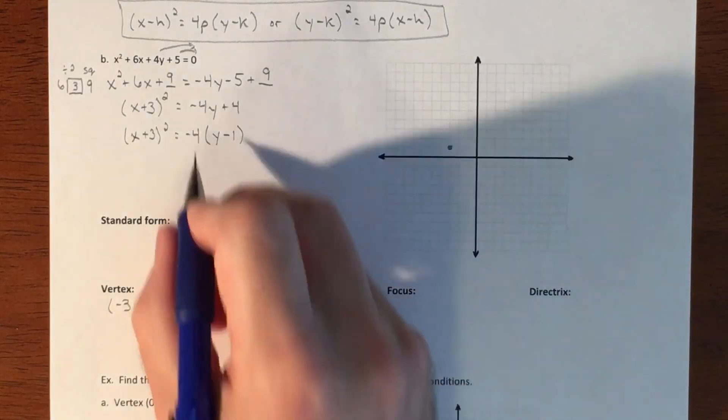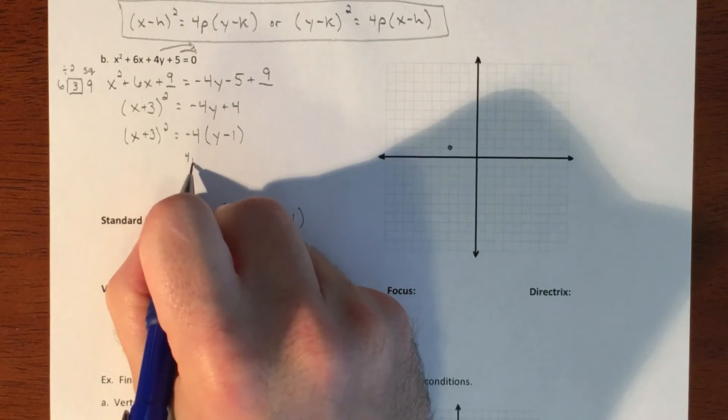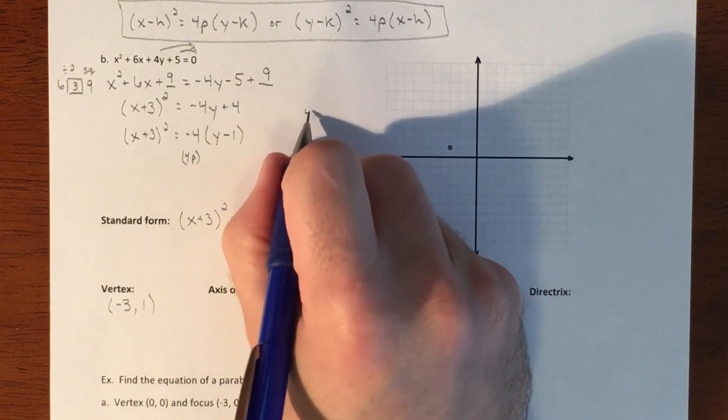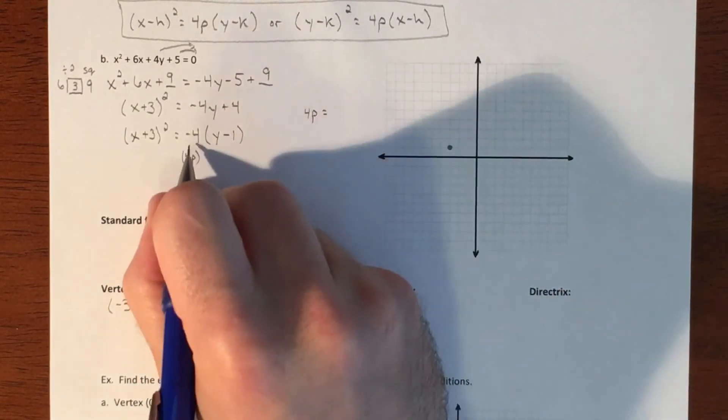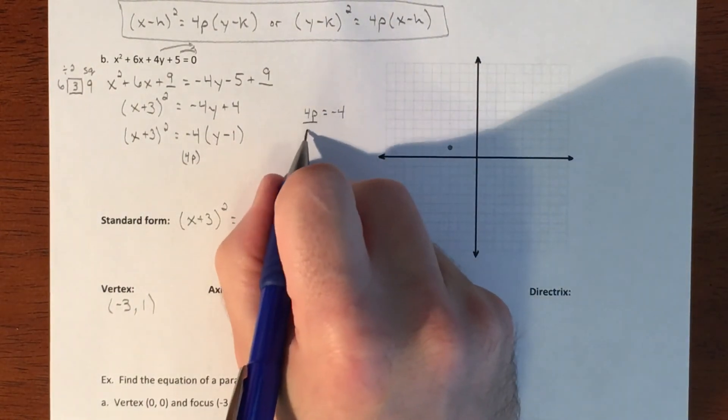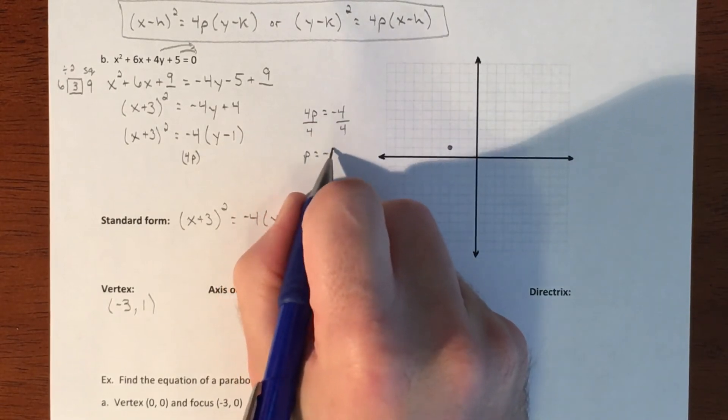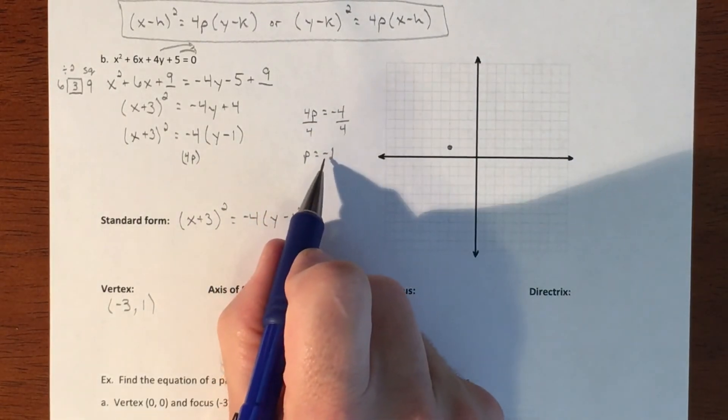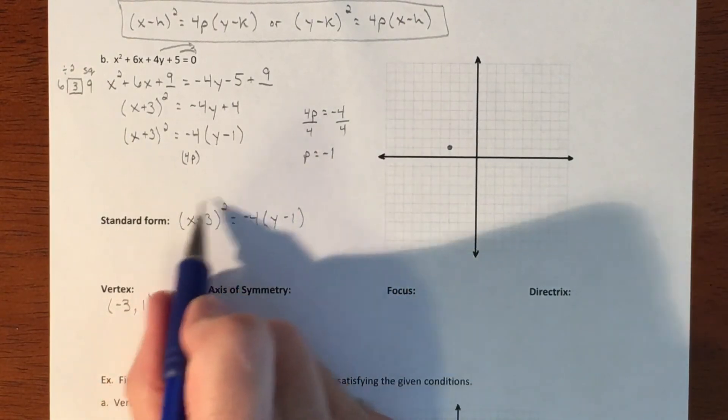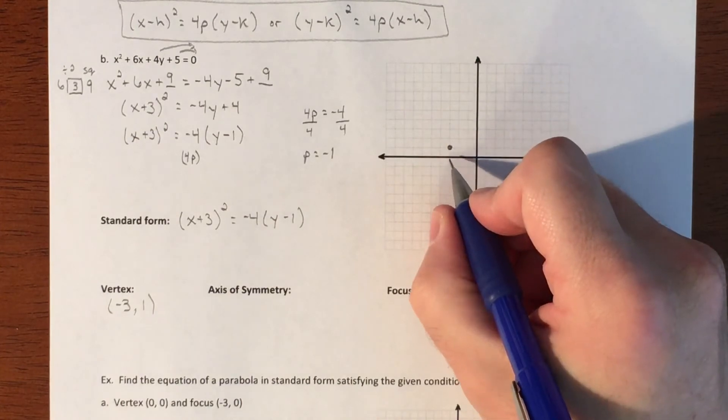Our focal point is going to come from this negative 4. But remember that this is the 4p piece. So I take 4p, set it equal to negative 4, whatever that value is, and find out what p equals. All right. p equaling negative 1. This was an up and down graph because it was x being squared. And that p tells me that we're going to go down 1.